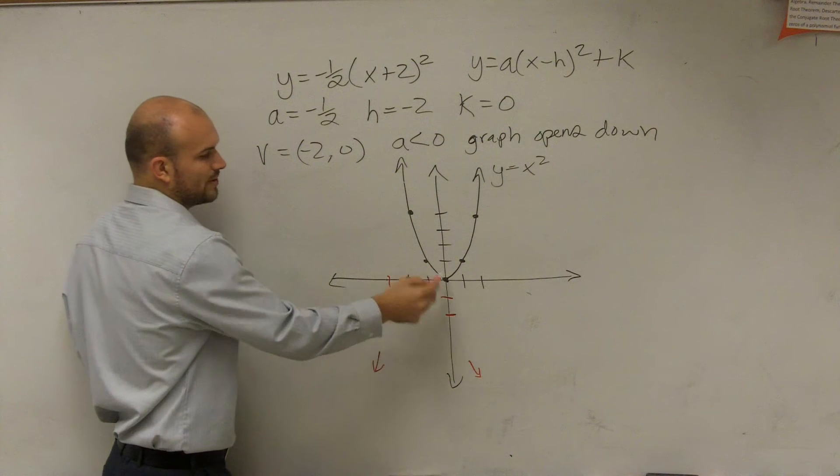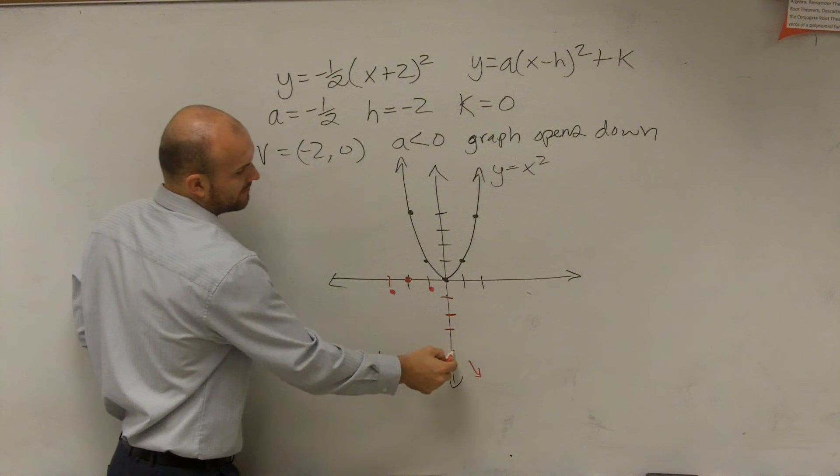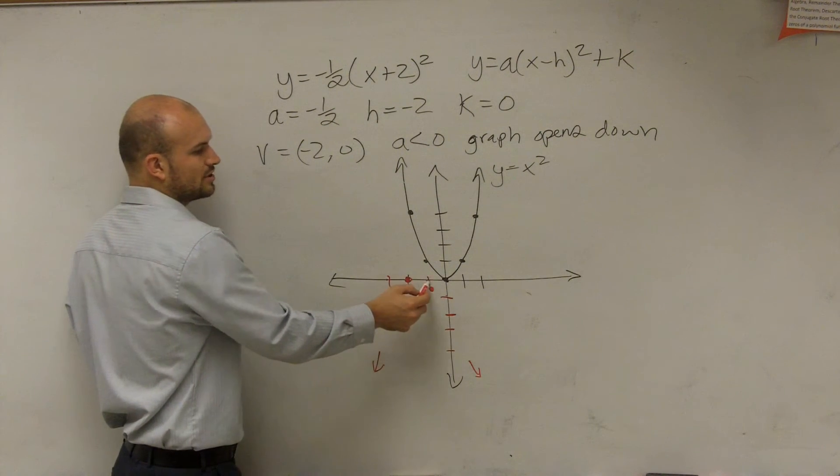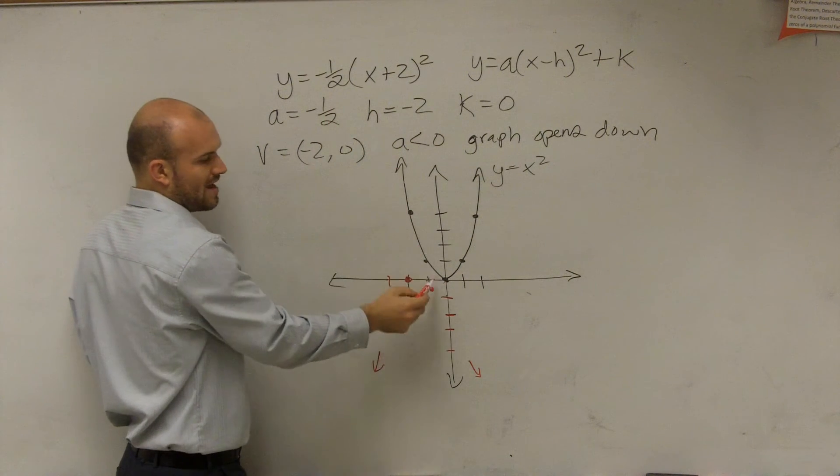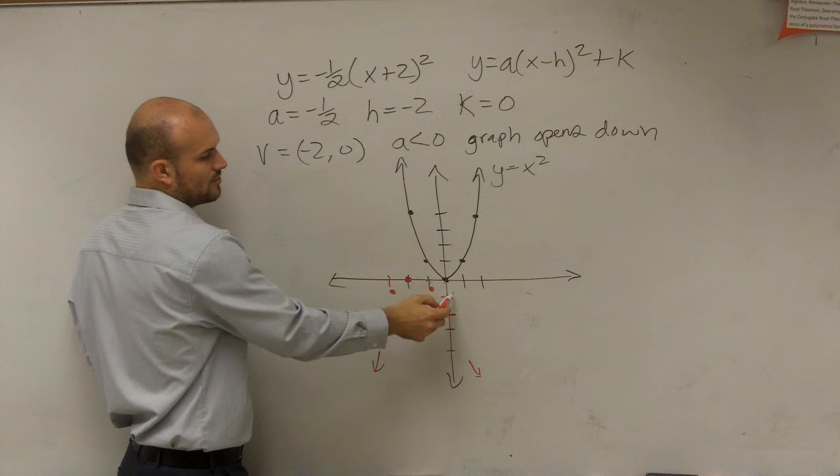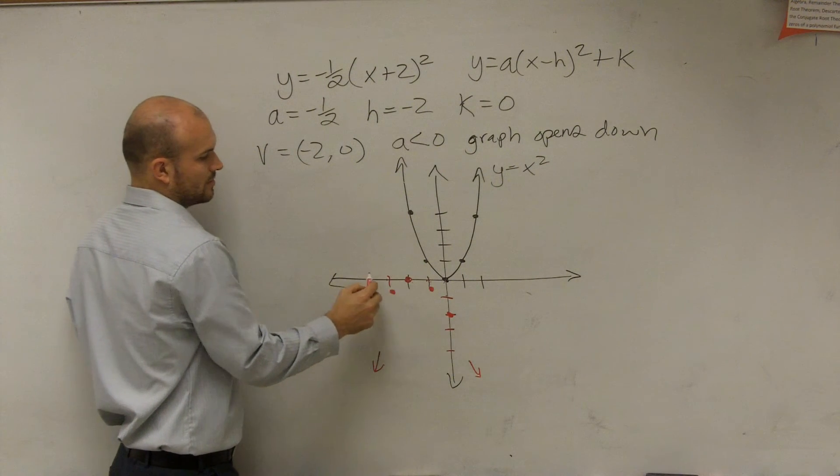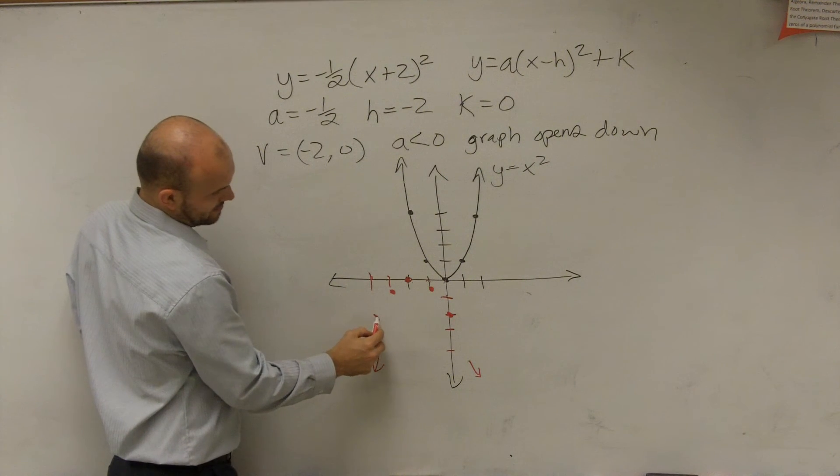Then, instead, the old parent graph, 1, 2, 3, 4, you'd go to the left, or to the right 2, down 4. Now we're going to go half of that. To the right 2, down 2. To the left 2, down 2.